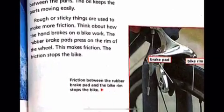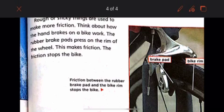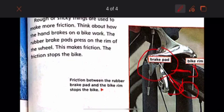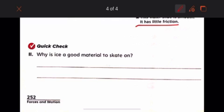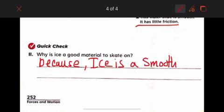So let's move on. Think about how a hand brake on a bike works. The rubber brake pads press on the bike rim of the wheel. This makes friction. The friction that happens here stops the bike. So friction between the rubber brake pad and the bike rim stops the bike. Why ice is a good material to skate on? Because ice is a smooth surface.